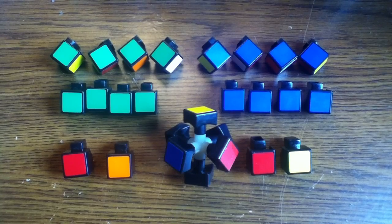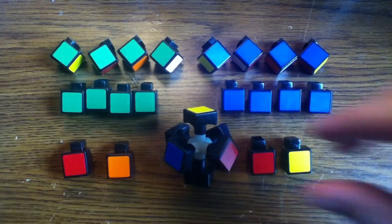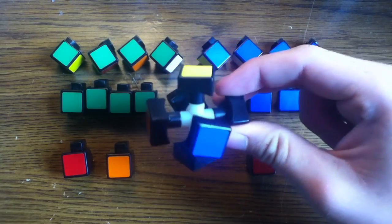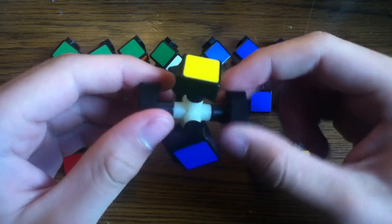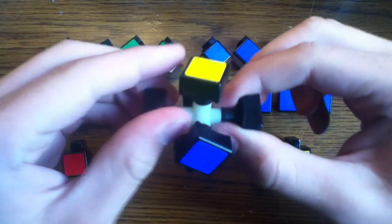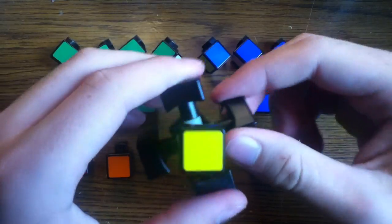Once you've taken all the edges and corners off, you're left with this center piece. The center piece has six middle pieces on it, which each turn independently. The center piece is what holds all the other pieces together through these middle pieces here.